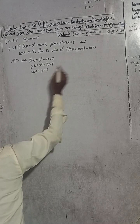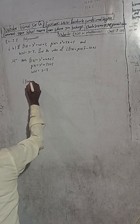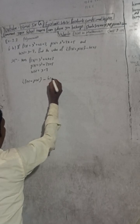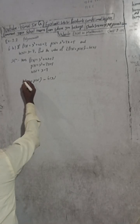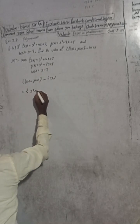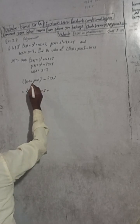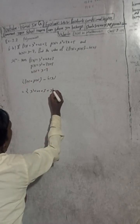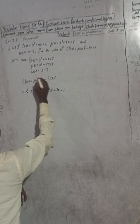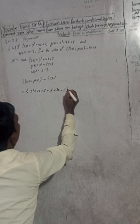Now we have to find: curly bracket f of x plus g of x, close bracket, minus h of x. So put the curly bracket, and copy f of x here: x squared plus 4x plus 3, and since it's plus, copy g of x: x squared plus 7x plus 5.